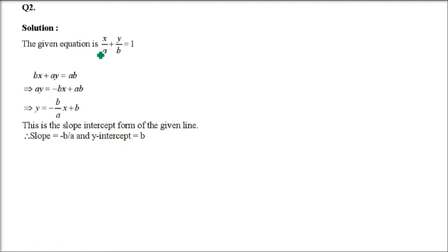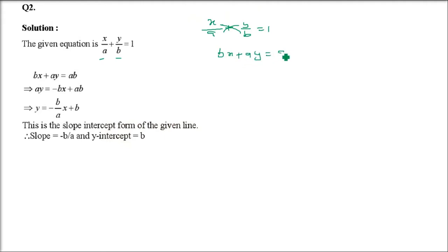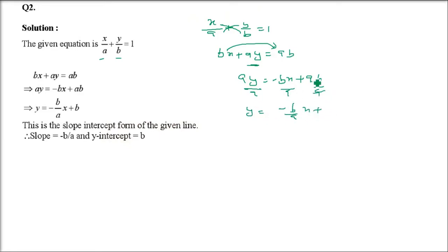Question 2: put the equation x/a + y/b = 1 into slope-intercept form and find its slope and y-intercept. Cross-multiplying gives bx + ay = ab. Rearranging: ay = -bx + ab. Dividing by a: y = (-b/a)x + b. Equating with y = mx + c, the slope m = -b/a and the y-intercept c = b.